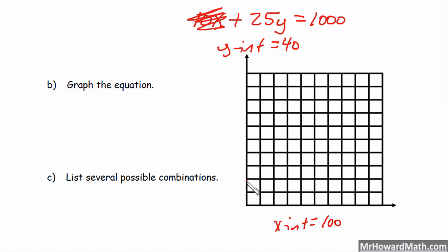So the Y intercept would be 1, 2, 3, 4 up at 40. And then the X intercept would be at box 10 because 10 times 10 is 100. And then we could graph our line in like this. Alright, so that would be the line with the Y intercept at 40, X intercept at 100.